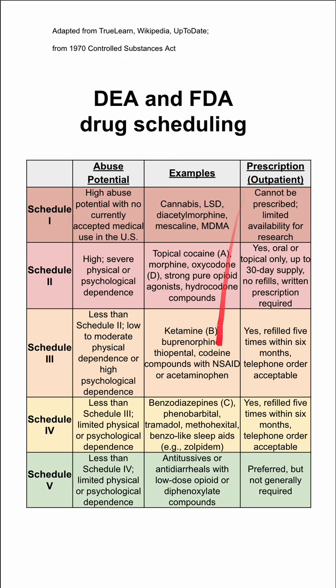Some of this information might seem outdated — this is how they presented it. Schedule 1 includes medicines that have high abuse potential with no currently accepted medical use in the United States. These include cannabis, LSD, diacetylmorphine, mescaline, and MDMA. These cannot be prescribed, and only limited amounts are made available for research.